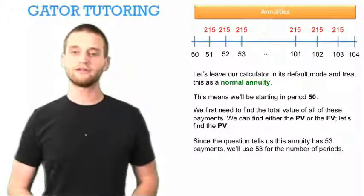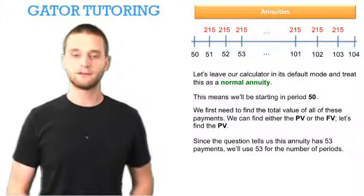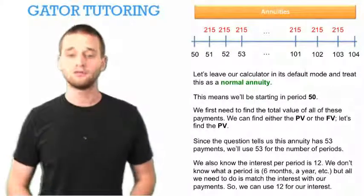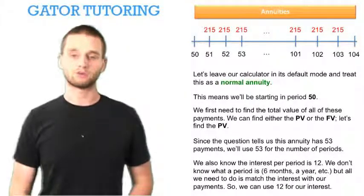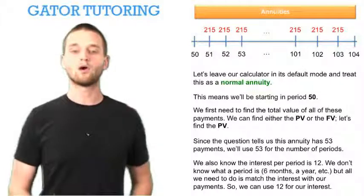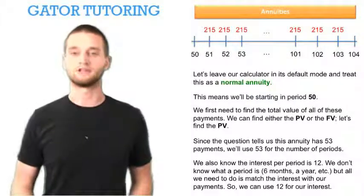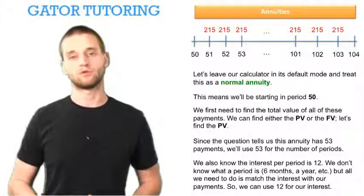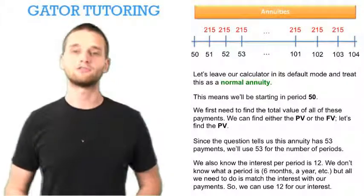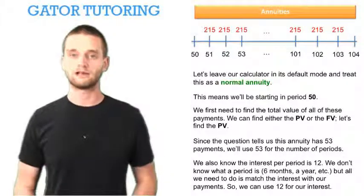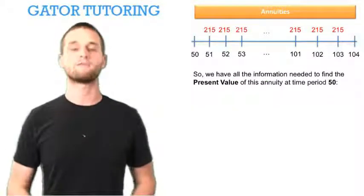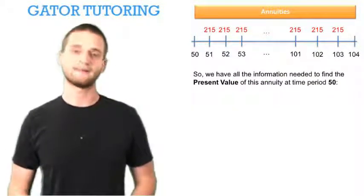Since the question tells us that this annuity has 53 payments we'll use 53 for the number of periods. We also know that the interest per period is 12%. We don't know what a period is whether it's six months or a year but all we need to do is match the interest with our payments. So we can use 12% for our interest in our financial calculator.